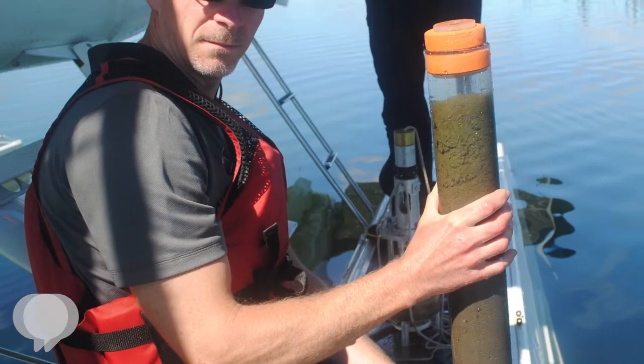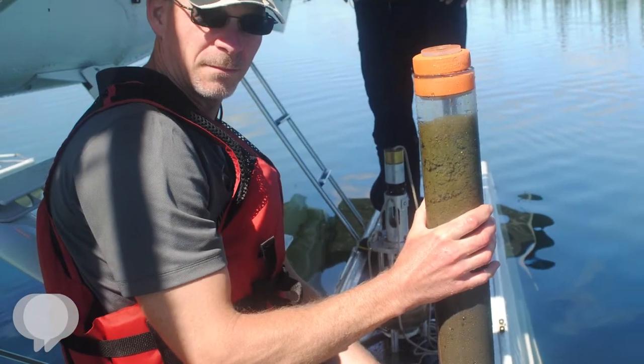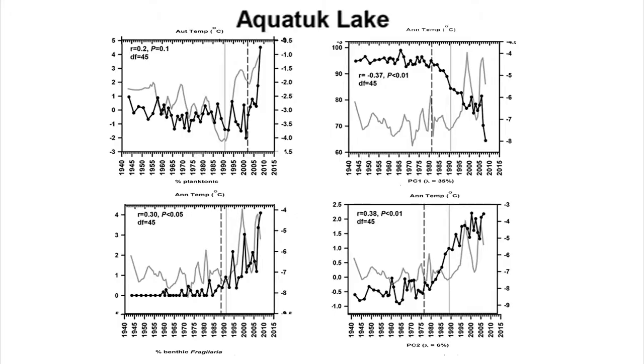Since we know what these organisms require and we can find their fossils going down through history, we have independent ways to date how old each layer is — we can say this is the 1820s, this is the 1750s, this is 500 years ago. We can see how these organism assemblages have changed over time, and by looking at that we can reconstruct how the environment has changed.